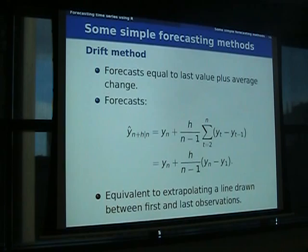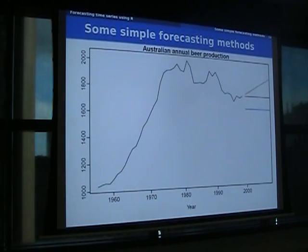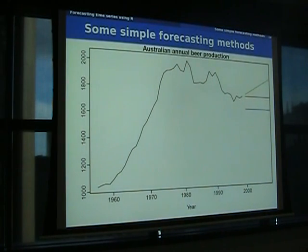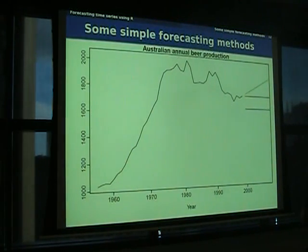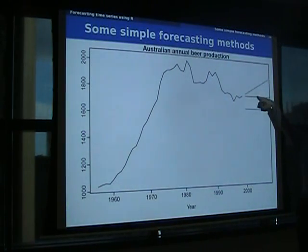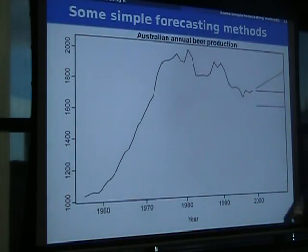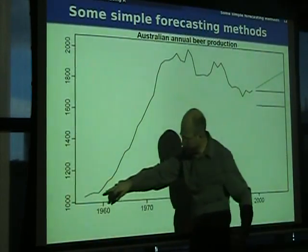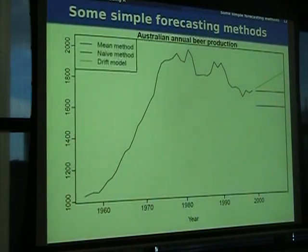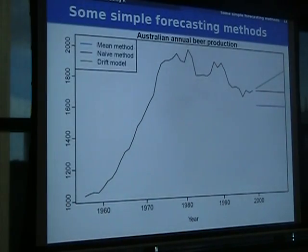Those are the four benchmarks I tend to use in forecasting when I'm developing new methods. Here they are applied to Australian annual beer production. The blue line is the average, the red line is the naive, and the green is the drift — drawing a line from the first to the last point extended forward. In this case none of them are very good forecasts, but they're the benchmarks.